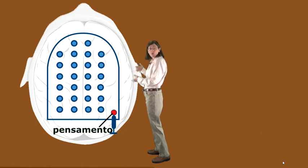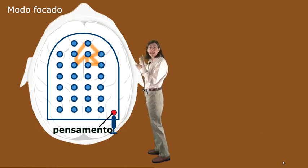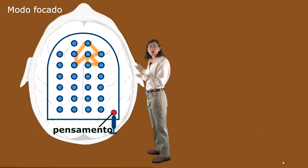There's the analogy for the focused mode. The blue rubber bumpers here are placed very close to one another. See the orange pattern here towards the top? It represents a familiar thought pattern.